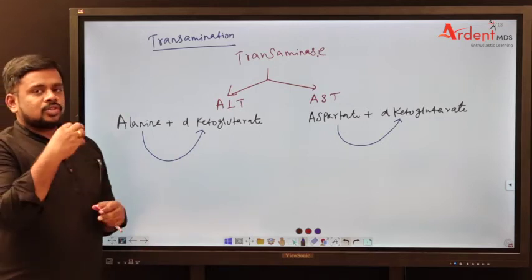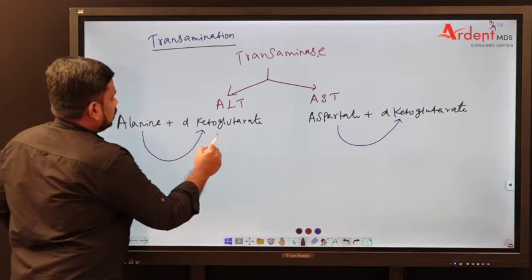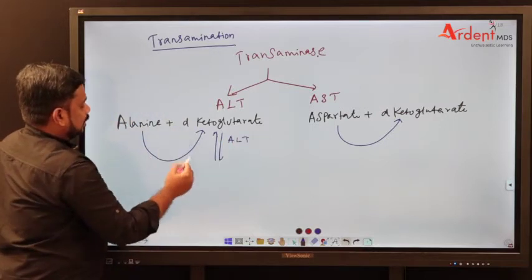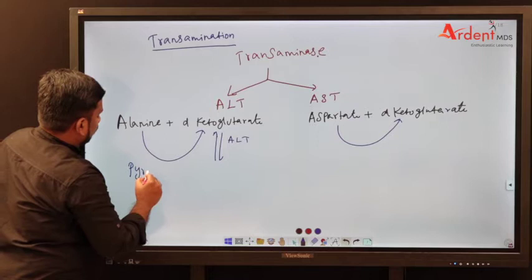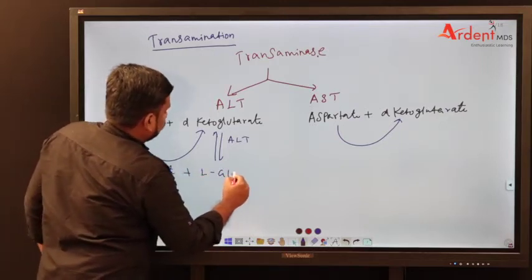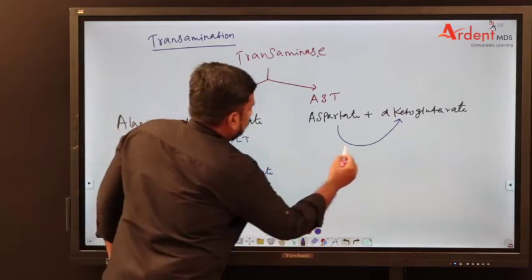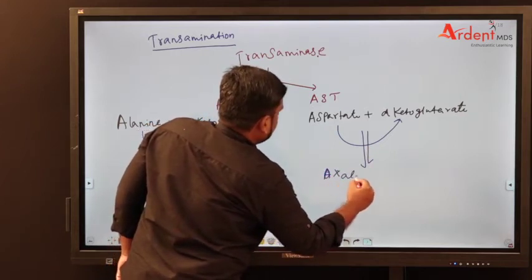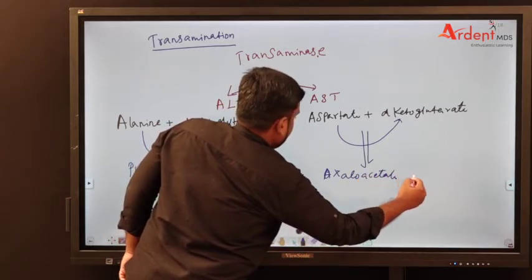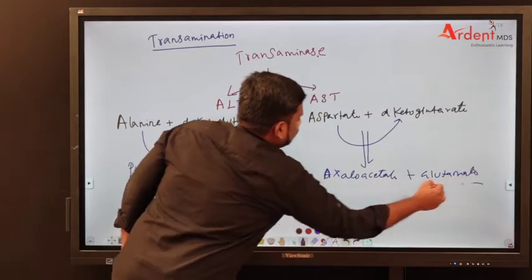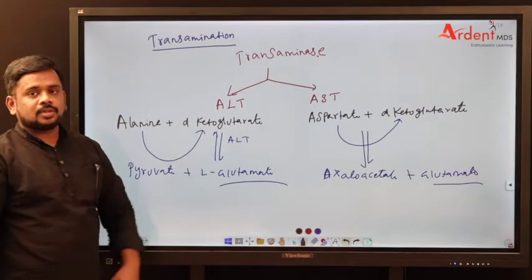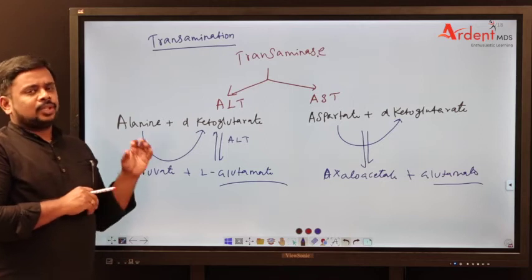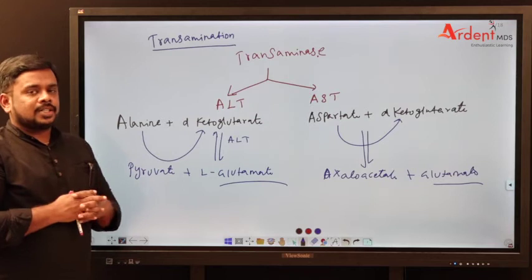Alpha-ketoglutarate receives the amino group, and by the help of alanine transaminase it will be converted into pyruvate plus glutamate. What you have to know here is that the final product in both processes is glutamate. Why glutamate? Because glutamate is the only amino acid which can go for oxidative deamination.